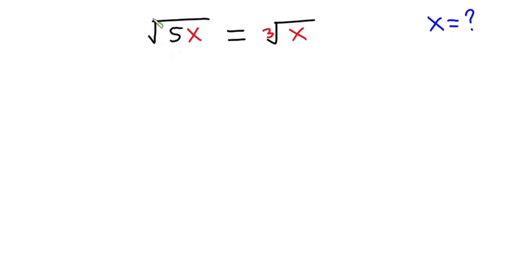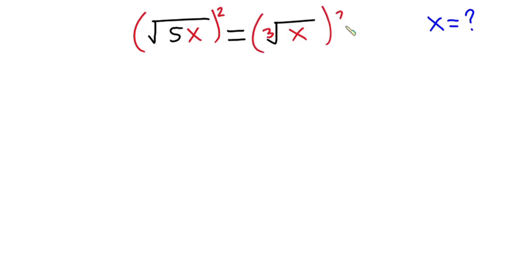In order to solve for x in this equation, the first thing you need to do is to remove one of these roots. So I'm going to remove this square root by raising each side of this equation to the second power, so that these two will cancel the square root. Now we have this side as 5x.